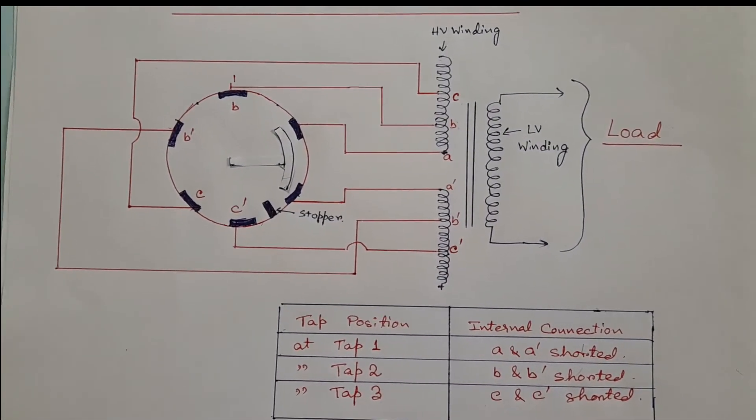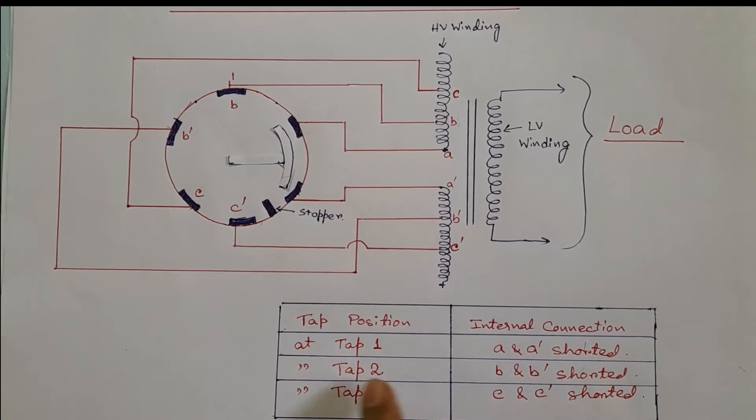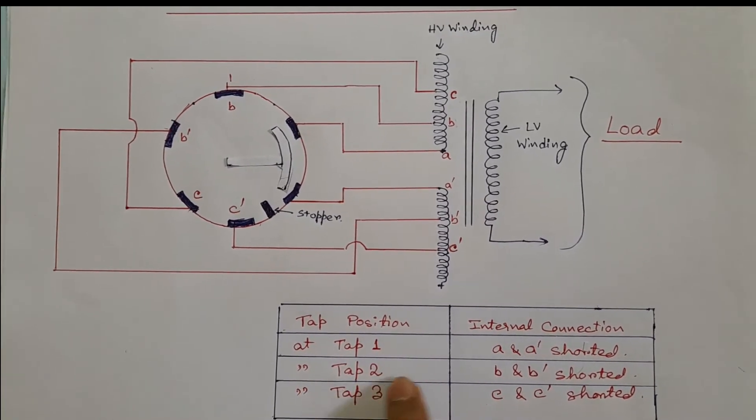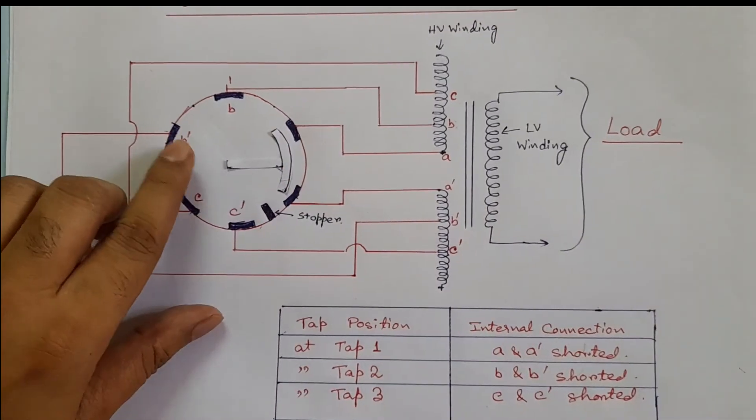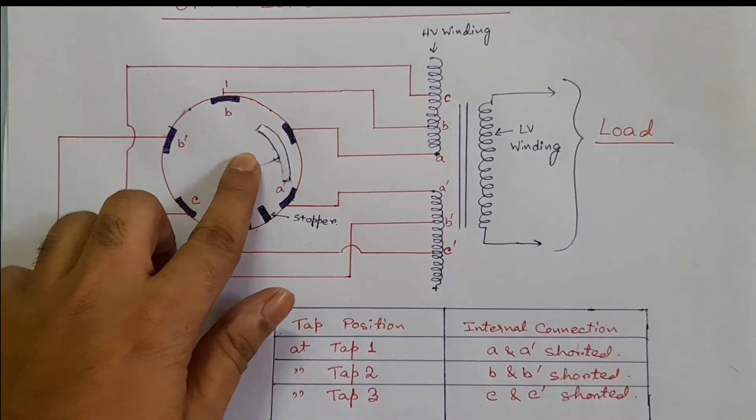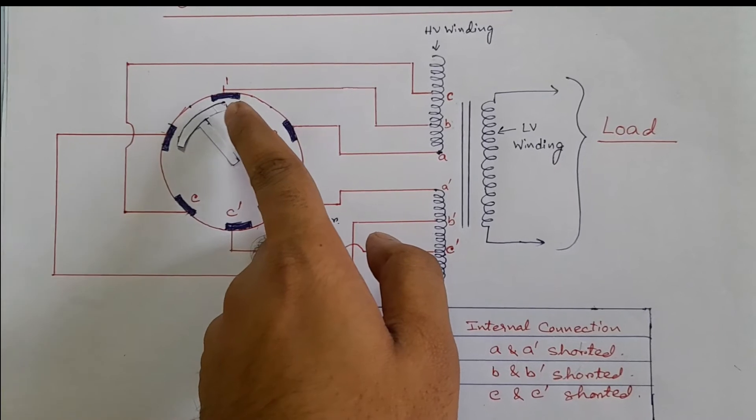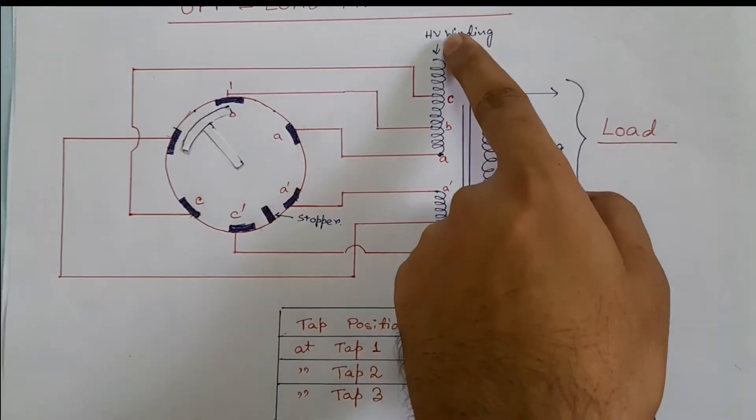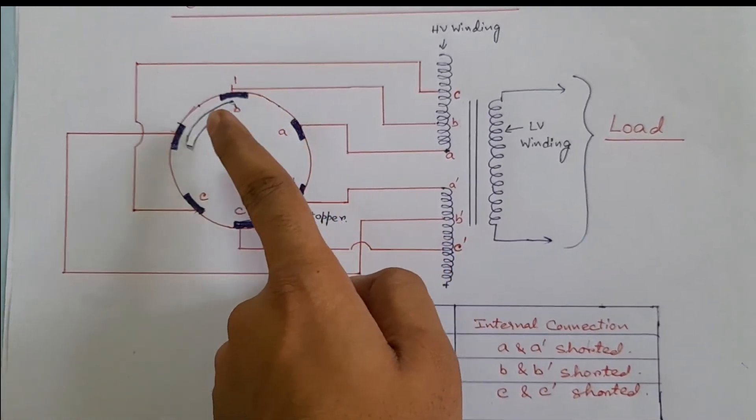Now we want to change tap position from one to two. In tap position two, B and B' must be shorted. So we will rotate this rotary switch, and at this position, B and B' terminals are connected. So HV current will flow in this path.